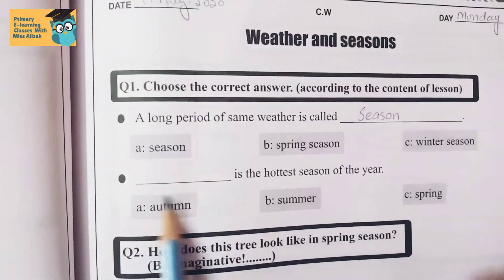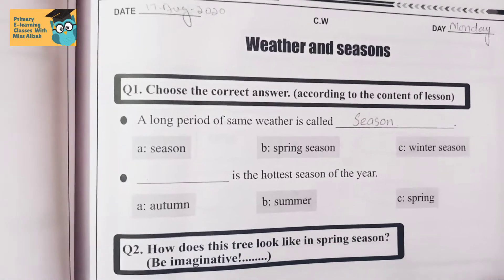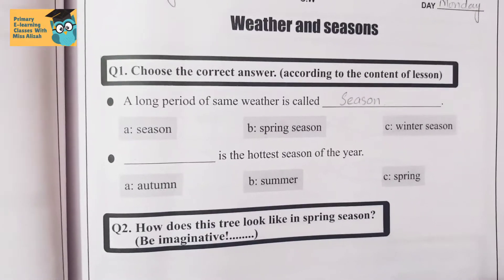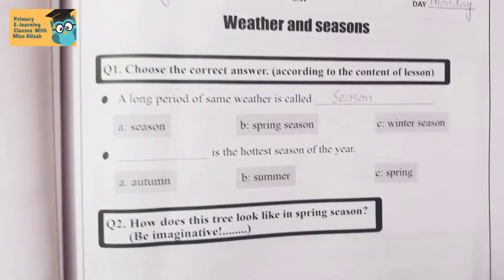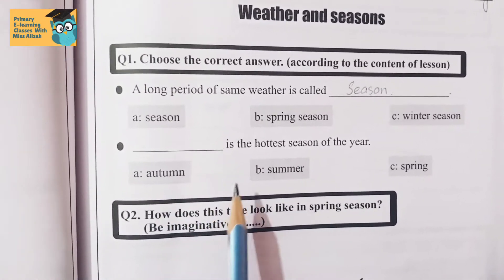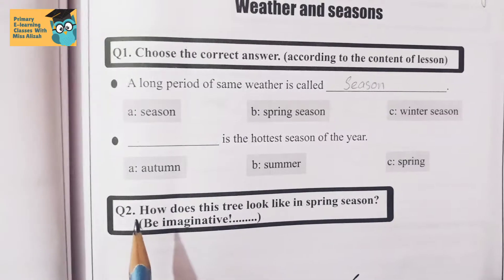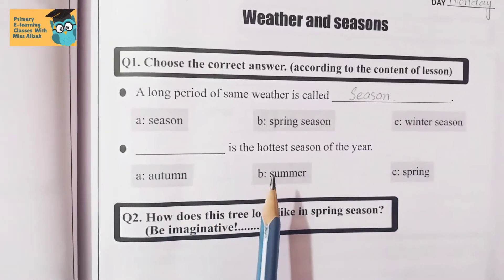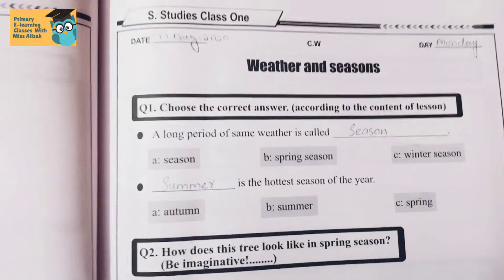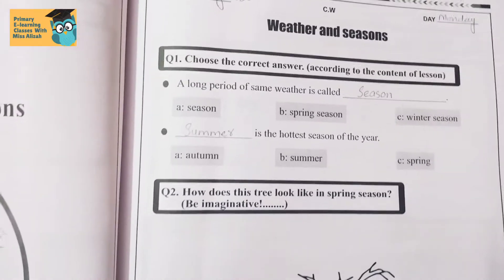The second one: dash is the hottest season of the year. So which season is the warmest — autumn, summer, or spring? Obviously the answer is summer. Write down 'summer' in the blank.